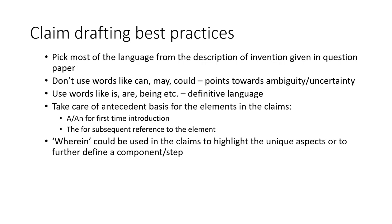You need not create your own language — just to save time. Don't use words like 'can,' 'may,' or 'could,' because these words point towards ambiguity or uncertainty. You have to have specific, definitive language, and thus you should use 'is,' 'are,' or 'being' when defining what the composition includes. You should take care of proper antecedent basis for the elements in the claims. Any component being defined for the first time should use 'a' or 'an,' and when defining it subsequently you could use 'the.' Finally, you could use 'wherein' to highlight unique aspects or further define a particular component or step.